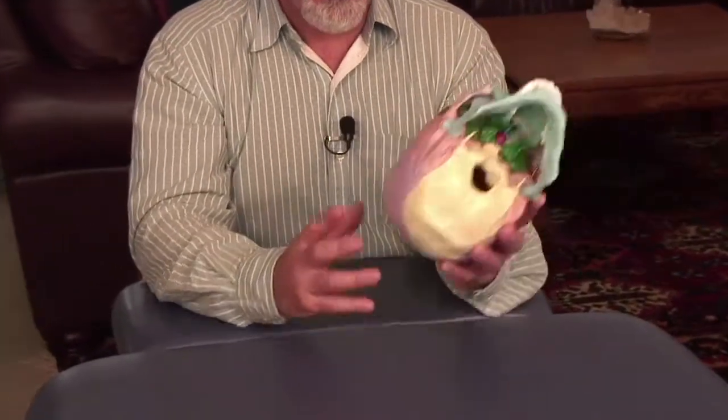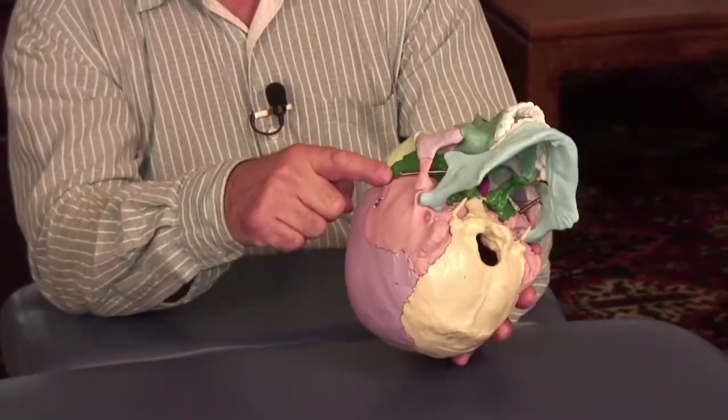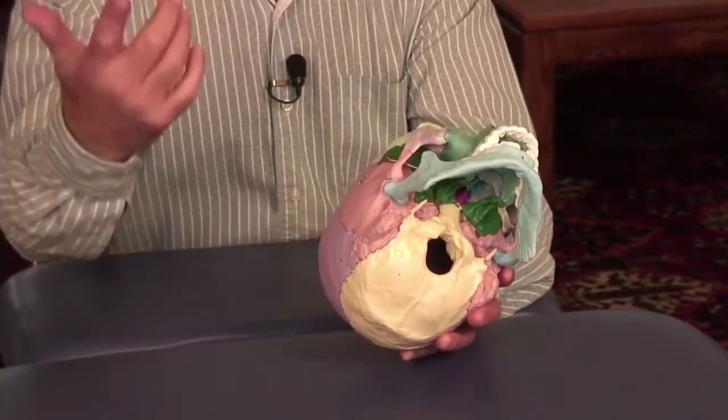We're using this color-coded skull replica to facilitate learning. This dark green is called the greater wing of the sphenoid, and I will refer to this as a pointer finger or a trigger finger.